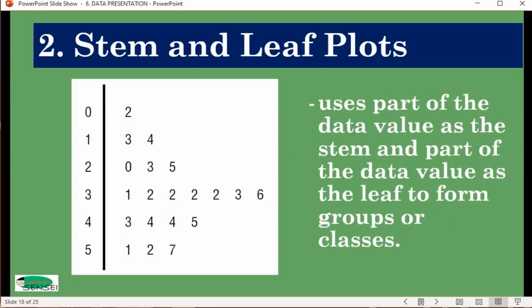Stem and leaf plots are used to simply group together values according to their digits. For instance, these are your tens digits on the left side and these are your ones digits. If you group them, you'd have 31, 32, and so on. This is important if you would like to see how many are in a certain range, like how many are under 10, under 20, above 10, above 20, and so on.